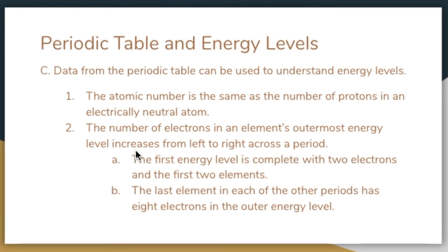The number of electrons in a neutral atom increases by one from left to right across a period. For example, the first period consists of hydrogen with one electron and helium with two electrons in energy level 1. Recall that energy level 1 can hold up to two electrons — therefore helium's outer energy level is complete, and atoms with a complete outer energy level are stable. The second period begins with lithium, which has three electrons: two in energy level 1 and one in energy level 2. To the right is beryllium with two outer-level electrons, boron with three, and so on until you reach neon with eight.